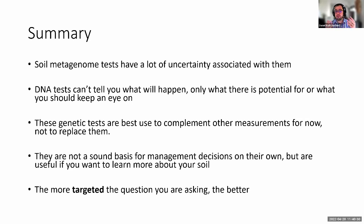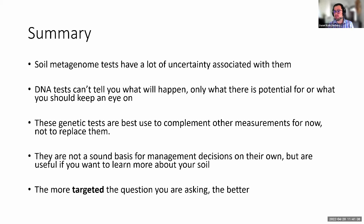It's also really hard to get clear management recommendations out of these metagenome tests because they're just not that reliable — we don't know enough about them yet. If you're looking at a metagenome test to answer 'should I spray for pests this year?' it's not going to give you a good answer. But if you have a more targeted question — 'what is this strange fungus I see on my plants and what can I do to treat it?' — a genetic test can give you a really good idea. To summarize: tests of the soil metagenome have a lot of uncertainty associated with them. They cannot tell you what will happen — they can only give you an idea of what there is potential for or what you should keep an eye on. They are best used to complement other measurements, not to replace them.